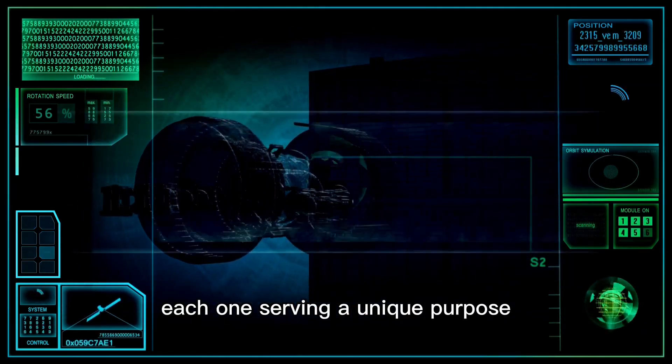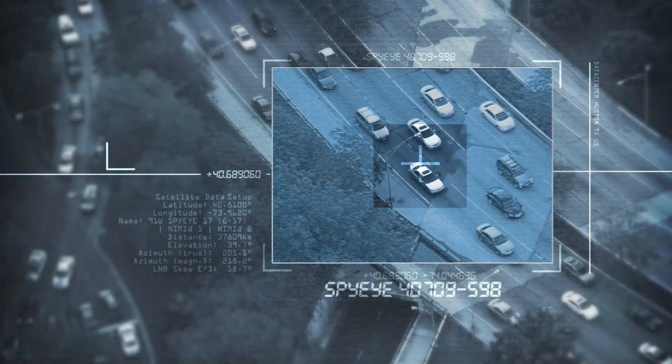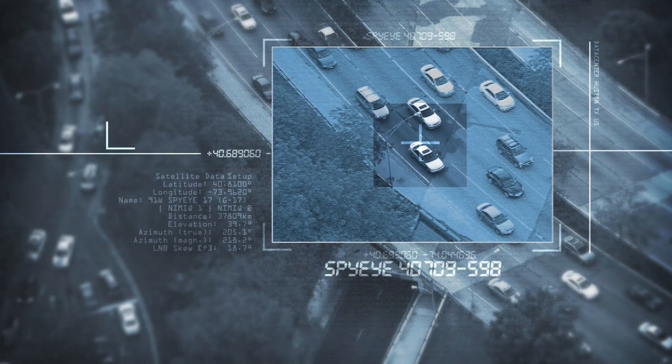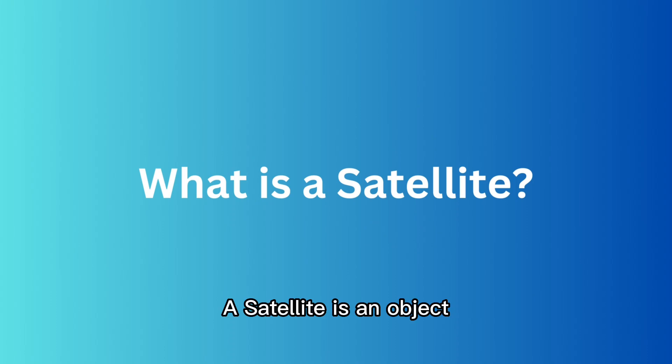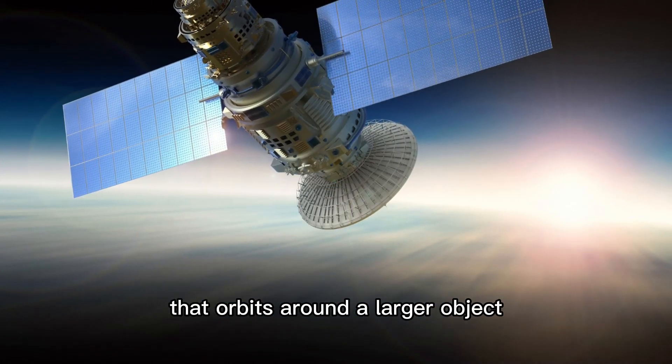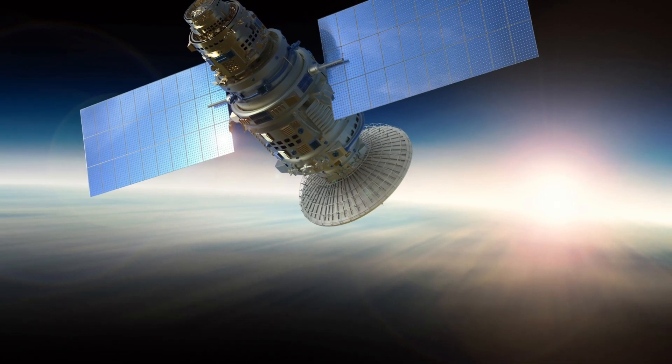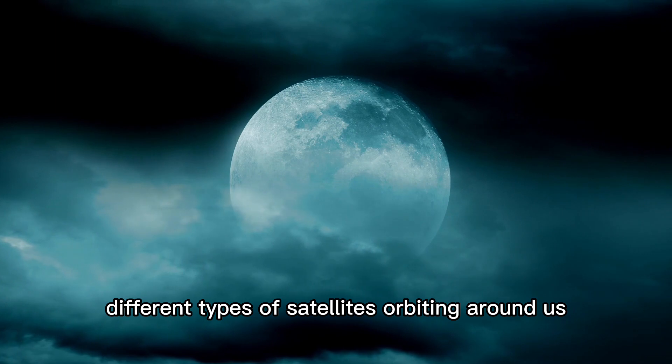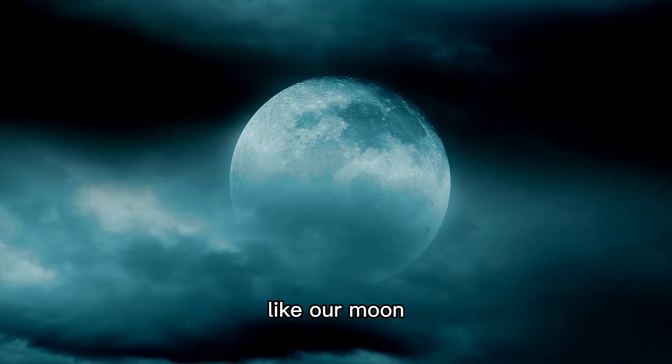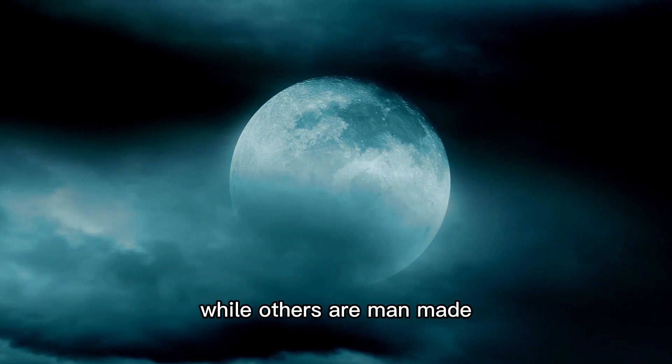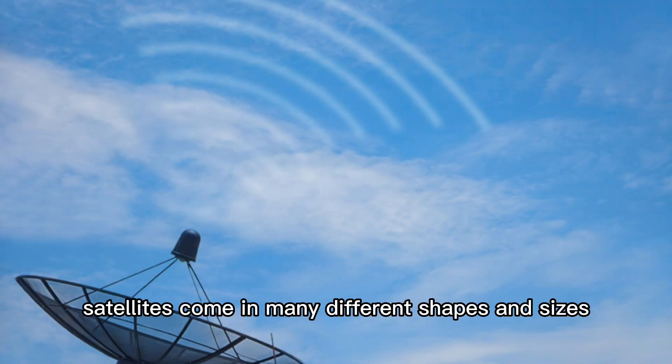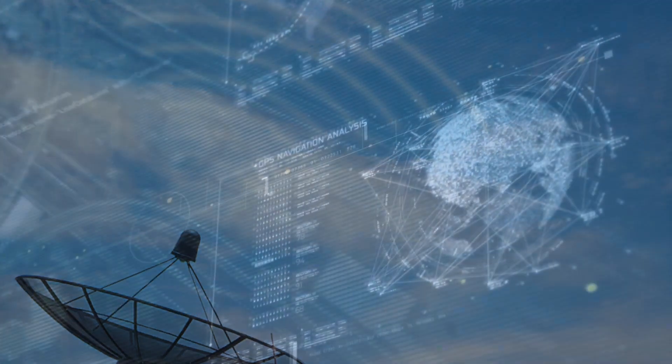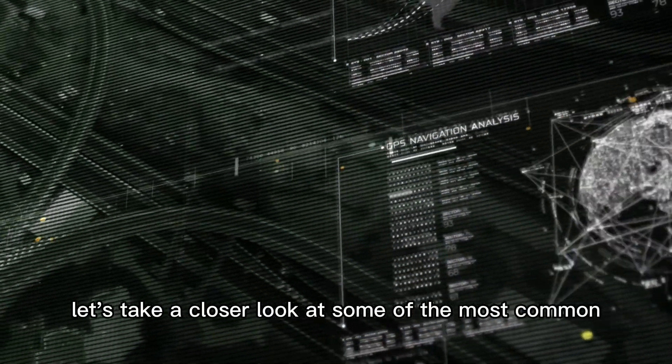Now let's take a closer look at what satellites are and how they work. A satellite is an object that orbits around a larger object, such as a planet. In the case of Earth, we have many different types of satellites orbiting around us. Some of these are natural satellites like our moon, while others are man-made. Satellites come in many different shapes and sizes, and they are used for a wide range of purposes.